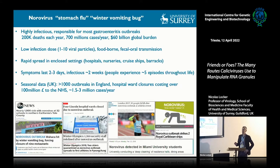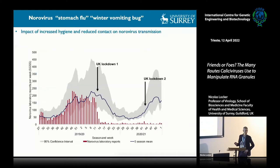In the UK, norovirus costs the healthcare system around 100 million pounds due to closure of hospital settings. COVID has been good for some things—we've all been washing our hands much more efficiently. Looking at lockdowns and increased health measures, the number of norovirus cases dropped completely during lockdown. So it costs the NHS a lot of money, but this can be addressed with very simple hand-washing measures.